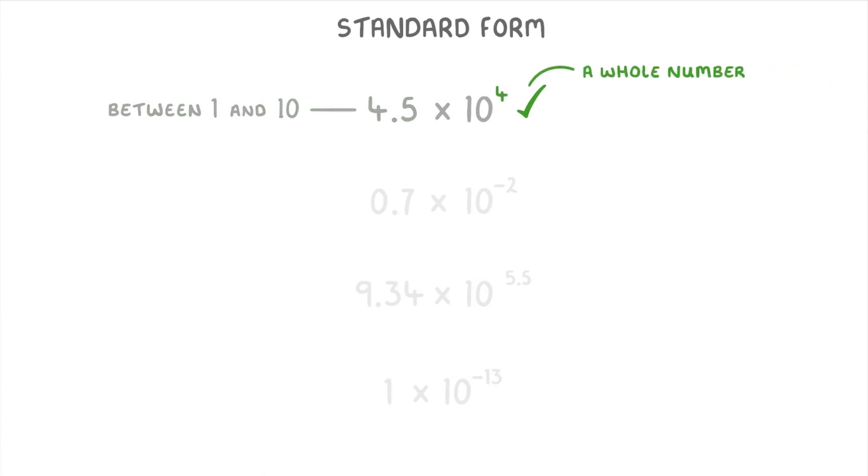This second one, 0.7 × 10^-2, isn't in standard form because 0.7, which is the front number, is less than 1.